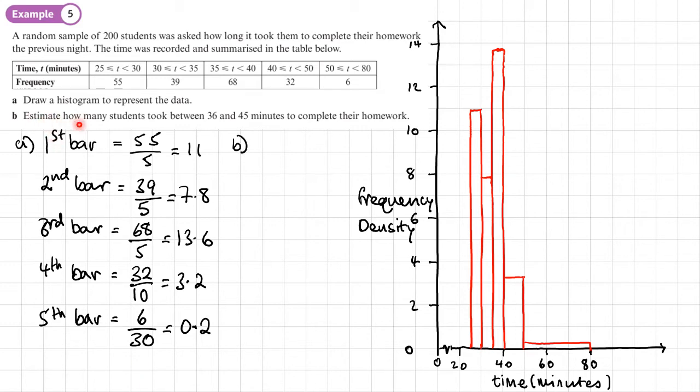Part B is asking us to estimate how many students took between 36 and 45 minutes to complete their homework. So the first thing we're going to do is try and shade which parts of the bars those represent. So we're talking about this part of this bar and this part of this bar.